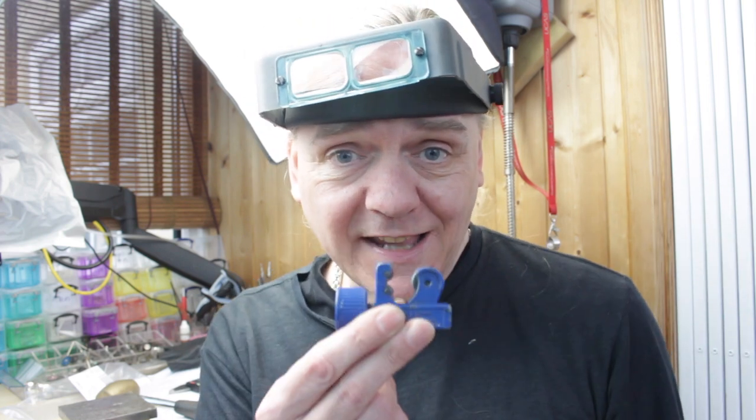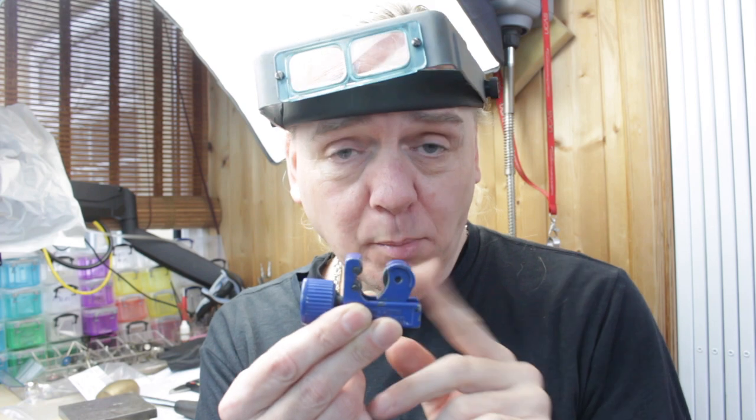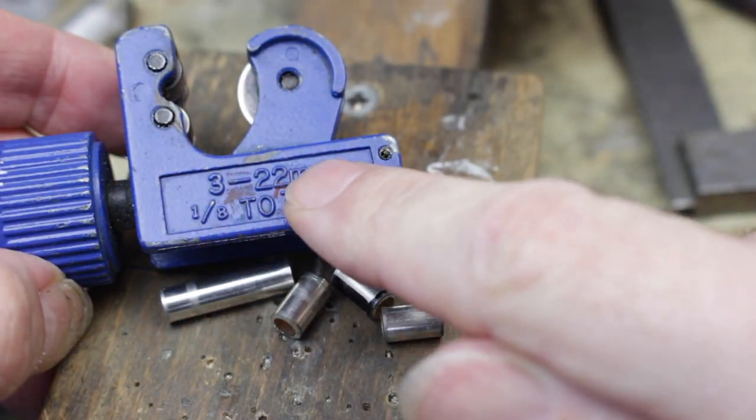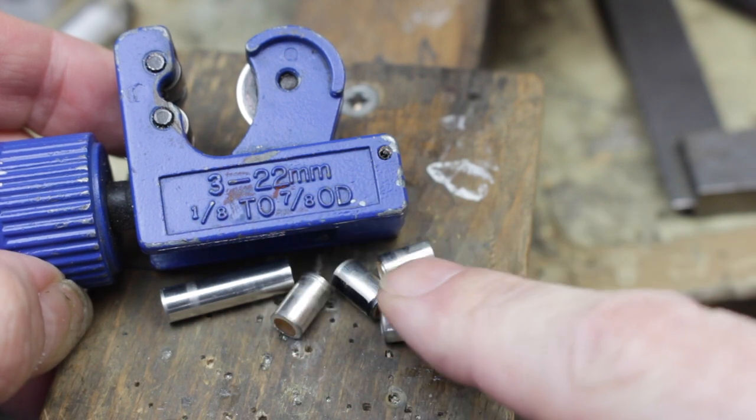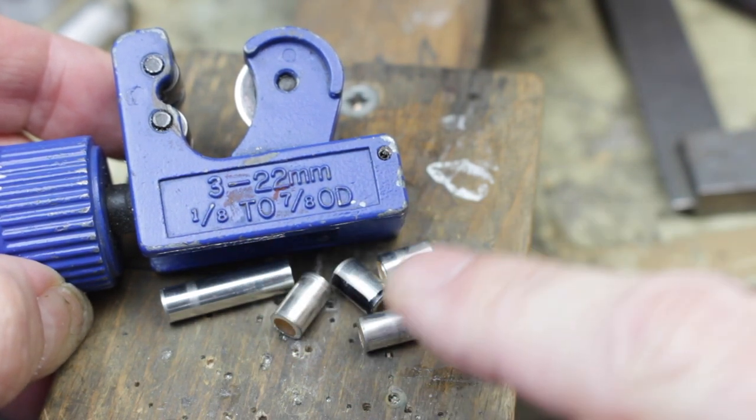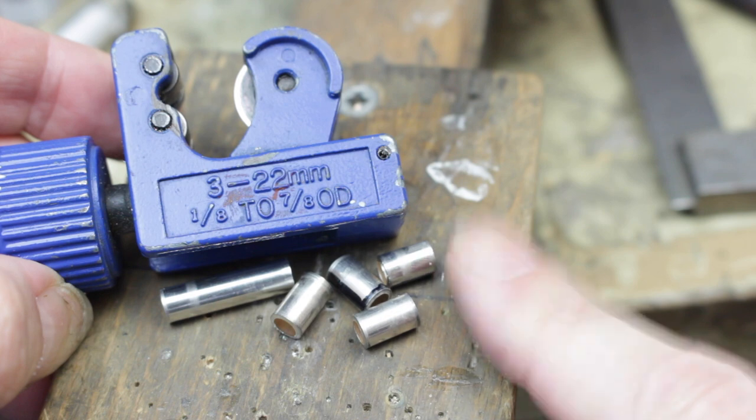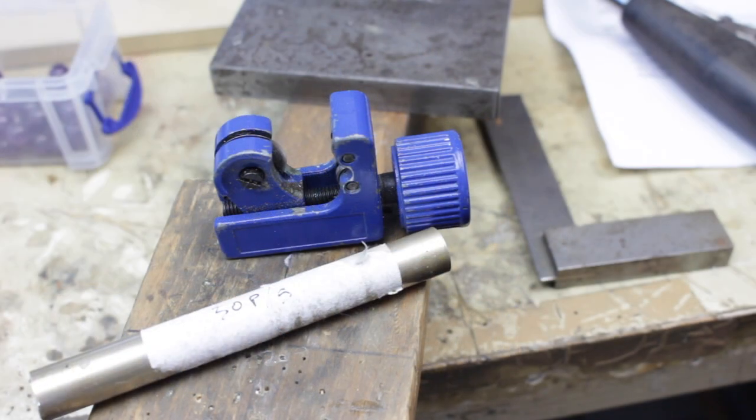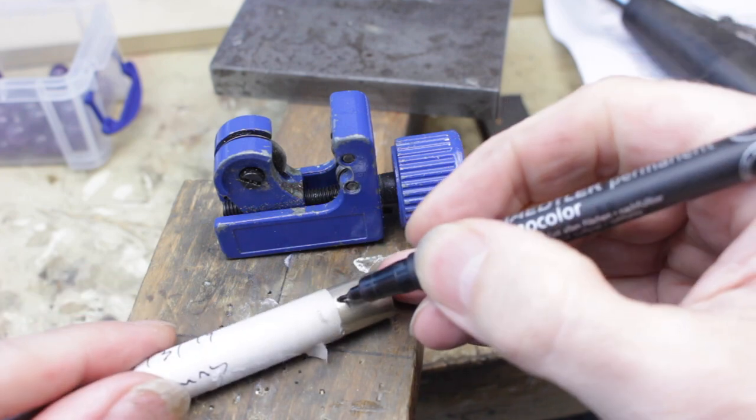Absolute mega top tip: if you're cutting lots of tube, get yourself one of these, a plumber's pipe cutter. You can find these in your local DIY store or buy them online. They are for plumbers for cutting copper tube, but this little tiny one is absolutely perfect for anything from three millimeters. It works a bit like a can opener.